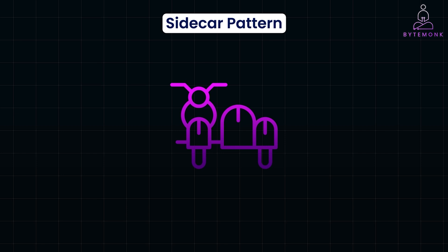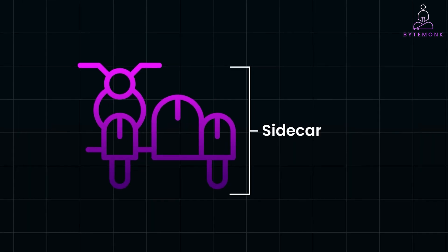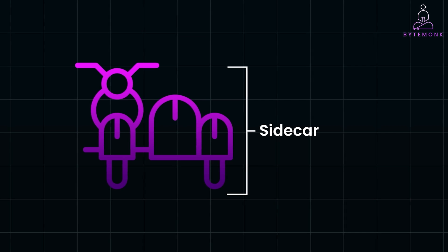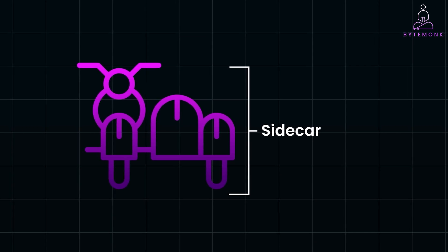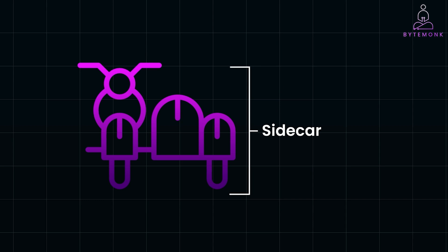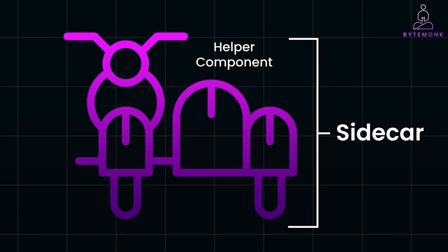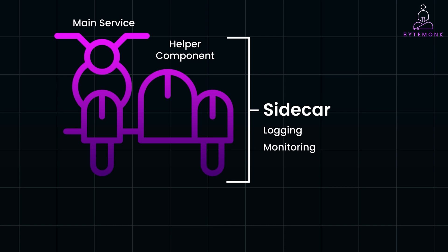The term sidecar is inspired by motorcycle sidecars, which are attached to the side of a motorcycle. They are independent units but still rely on the motorcycle for movement. In software architecture, the sidecar pattern is a design approach where a separate co-located component called a sidecar is deployed alongside the main service. The sidecar is responsible for handling non-business logic tasks such as logging, monitoring, service discovery, or even routing traffic. Think of the sidecar as a helper process that sits beside your main service, sharing the same lifecycle and resources.